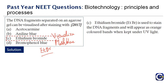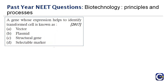The correct answer is option C — Ethidium Bromide. It is used to stain DNA fragments, which appear as orange-colored bands under UV light due to the fluorescent property of the stain. The next question, asked in the year 2017, is: a gene whose expression helps to identify transformed cells is known as blank. You have four options: vector, plasmid, structural gene, and selectable marker.